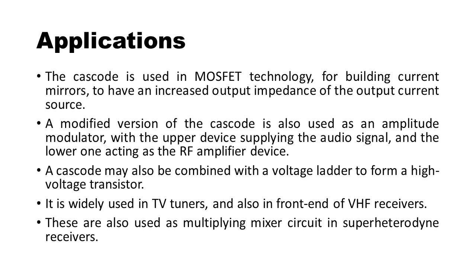Applications of the cascode amplifier are given below. The cascode is used in MOSFET technology for building current mirrors to have an increased output impedance of the output current source. A modified version of the cascode is also used as an amplitude modulator, with the upper device supplying the audio signal and the lower one acting as the RF amplifier device.